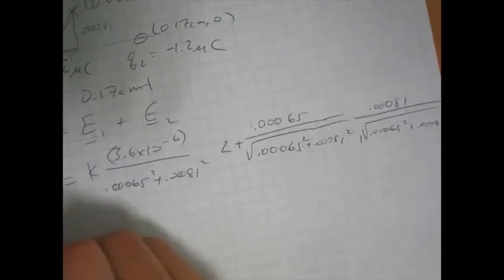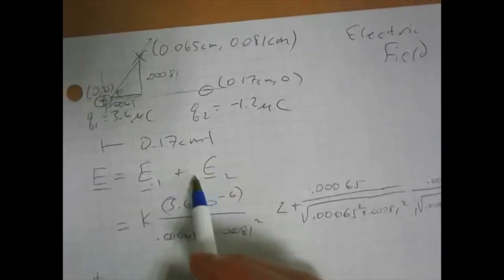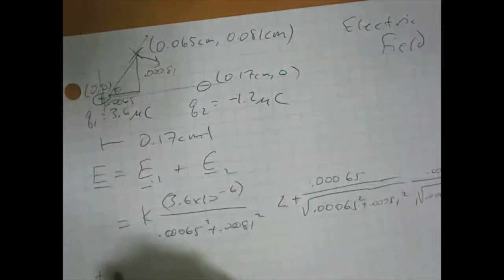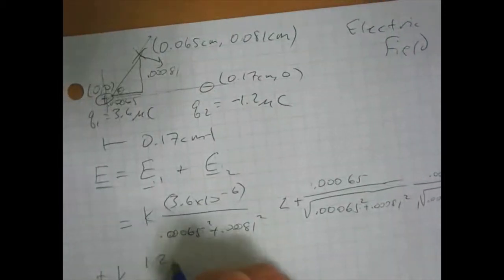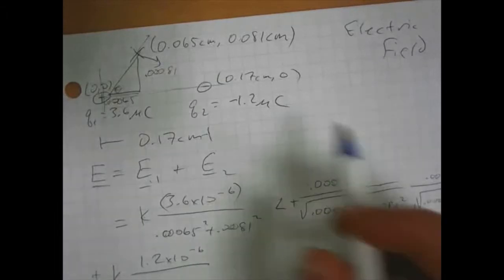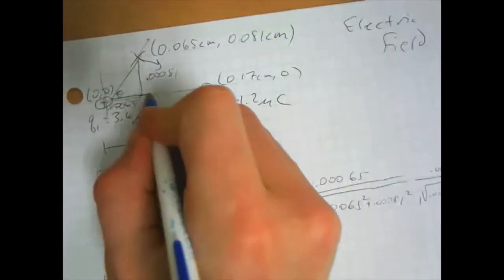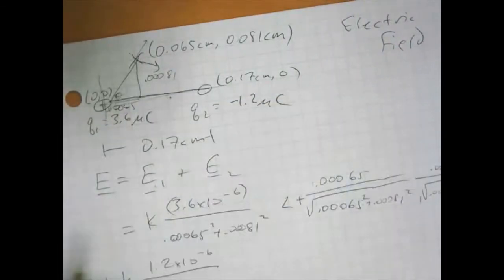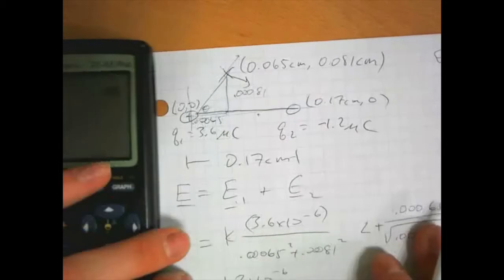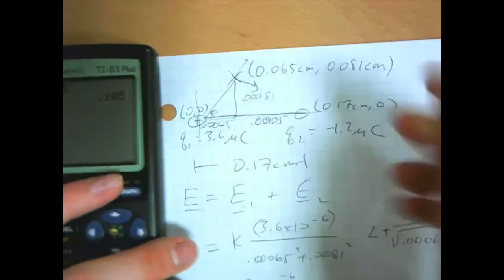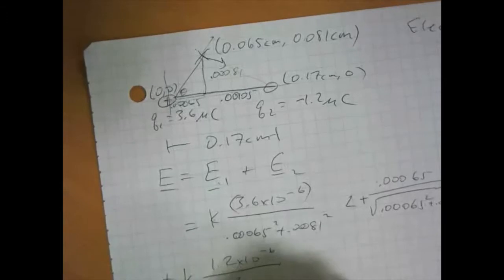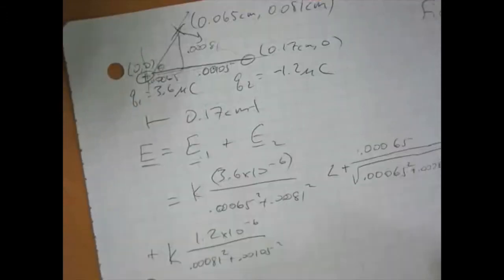Plus an E2 from this guy. That's going to be down and to the right, and our magnitude is going to be k times 1.2 times 10 to the minus 6 over, now we have to figure out our distances. Well, this is still 0.00081. And this side over here is going to be, we just subtract these two, 0.17 minus 0.065. That's 0.105 centimeters, so 0.00105. So then following the same pattern, this is 0.00081 squared plus 0.00105 squared. That's the magnitude.